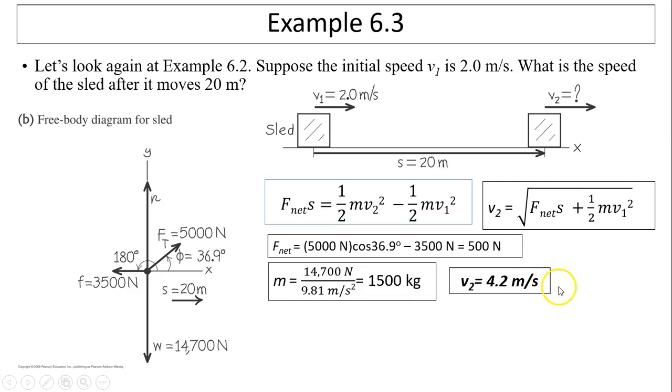So you get V2 equals 4.2 meters per second. There is another way to solve this. From the net force, we can find acceleration. Then from the timeless equation, we can use this expression. You will have 4.2 meters per second. These two answers are the same as we expected. So it is a good way to do it two different ways. So you can be sure your answer is correct.